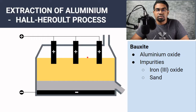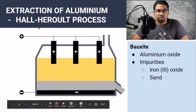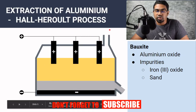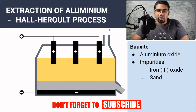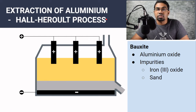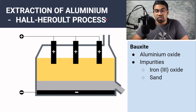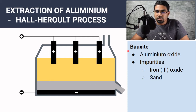The extraction of aluminium in this electrolytic cell is known as the Hall-Héroult process. Now, before we can extract aluminium from its oxide, we have to purify it first. The oxide of aluminium is called bauxite.